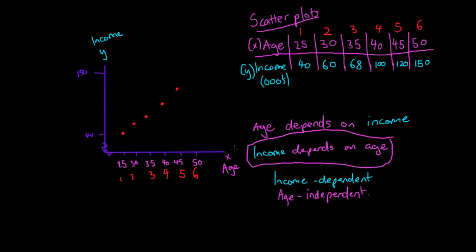Finally we plot our sixth observation at 50, reading up until we hit 150. And that's our scatter plot for age versus income.